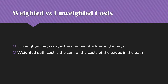When we're thinking about these problems we also want to distinguish between weighted and unweighted path costs. In an unweighted graph, the path cost is the number of edges in the path. We're also very interested in weighted path costs, which is the sum of the costs of the edges in the path. Today we're going to focus on unweighted graphs; my next two videos will be focused on dealing with weighted path costs.